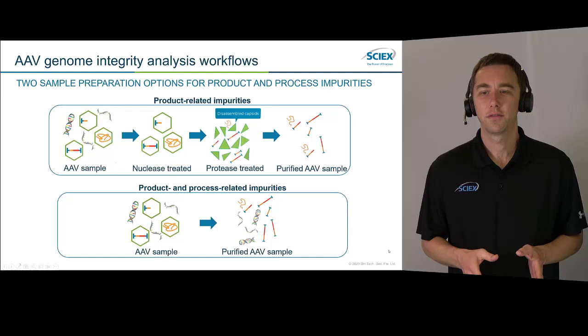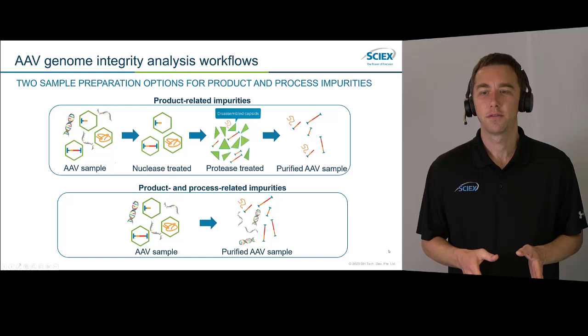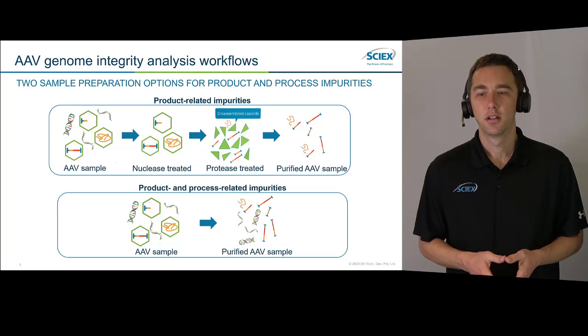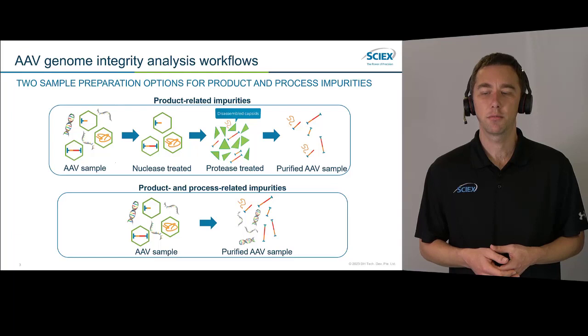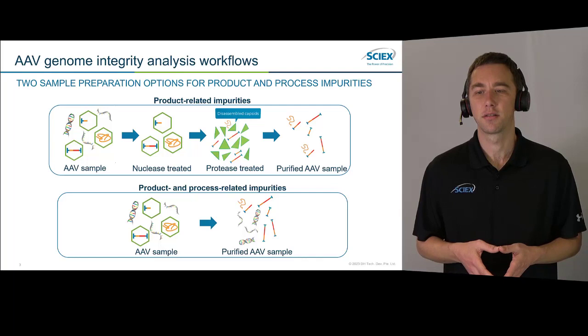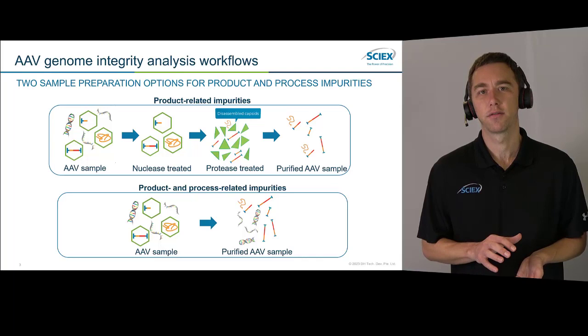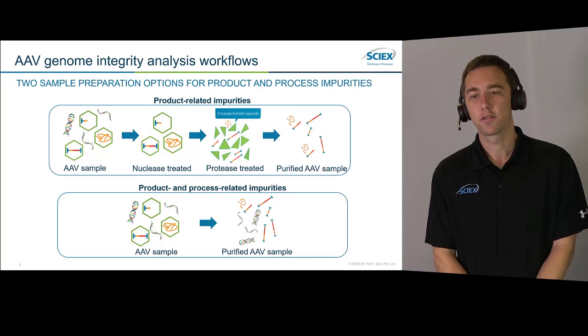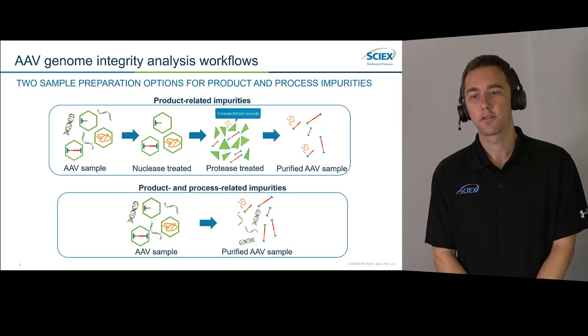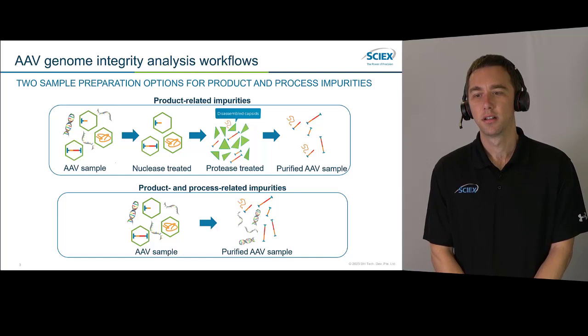With our AAV genome integrity workflow, we really have two sample prep options. We have a standard workflow on top that will allow us to monitor our product-related impurities. Then we have a quicker workflow that's going to allow us to look at both product and process-related impurities. In either workflow, we start with our AAV samples — some fully filled with our genome of interest, some partially filled with a truncated genome, some filled with something we didn't want to encapsulate. In our standard workflow, we use an endonuclease to chop up all unencapsulated nucleic acid material, so we're really just looking at what's within our AAV product.